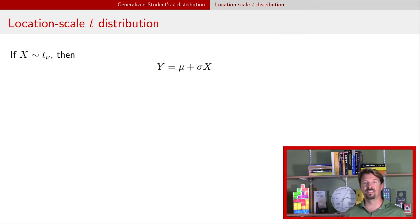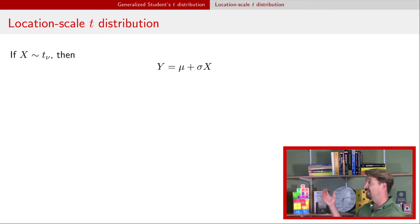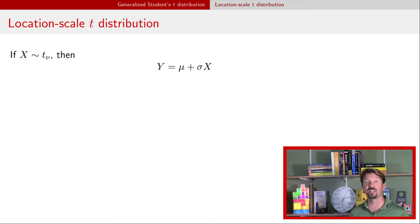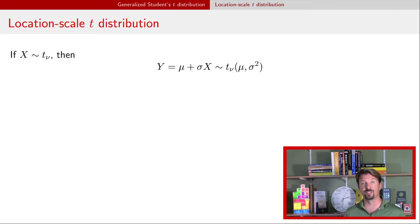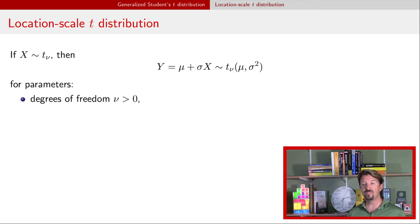Now I'm going to generalize the Student's t-distribution by introducing a location and a scale parameter. We have mu as the location parameter and sigma as the scale parameter. If we take a Student's t-distributed variable x with nu degrees of freedom, multiply it by sigma, and add mu, we get another t distribution — a generalized t-distribution. This generalized t-distribution has a location parameter mu and a scale parameter sigma, represented as sigma squared in the notation. So there are three parameters: degrees of freedom, location, and scale.